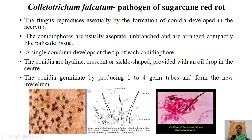The fungus reproduces asexually by the formation of spores called conidia, which are developed in a special fruiting body called acervuli. Here we can observe the black dot-like structures which are nothing but the fruiting bodies of the fungi — acervuli. From these acervuli, a special type of erect hyphae are developed, referred to as conidiophores, which are usually aseptate. They are intermingled with hair-like septate structures called setae, and these conidiophores cut down single conidia which are half-moon shaped.